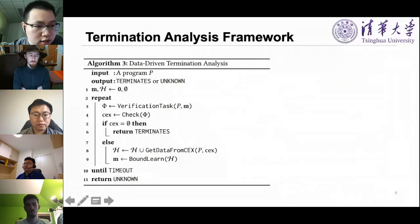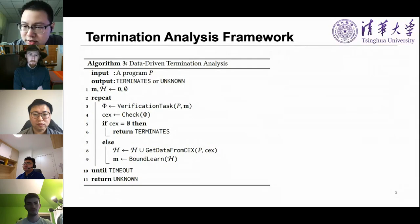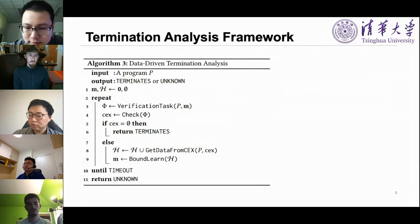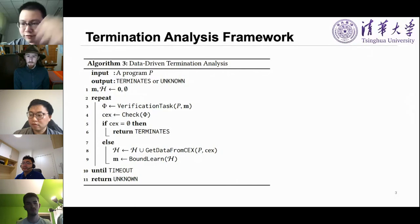For our input X, we can find that the loop must iterate no more than M equals minus X plus 11, or one times before finishing. We call such an M a loop bound for the loop. This is the main framework of our approach. Initially, the default loop bound M equals zero and the dataset H is empty. In the analysis, we will generate a verification task for the current loop bound M and check whether it is valid. If the current loop bound is valid, we can report the program terminates. Otherwise, we can produce a counterexample during the constraint solving and update the dataset. Then we can learn a new bound and repeat the procedure. There are two critical problems here: one is how to learn a loop bound and the other is how to check the loop bound.